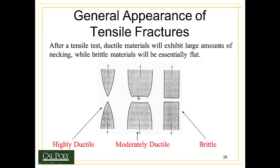On the other hand, if it necks down some but then has a jagged, tortuous appearance in the center, we call that moderately ductile. And if it doesn't neck down at all and just snaps in half, we call that brittle behavior. For example, chalk would break without necking, while silly putty necks down to almost a perfect point. Most materials show some combination of both ductility and brittle behavior.